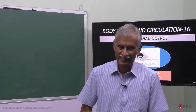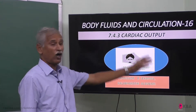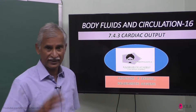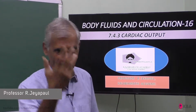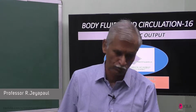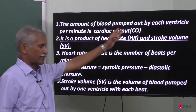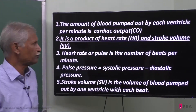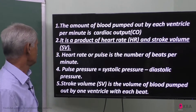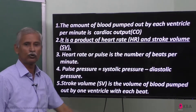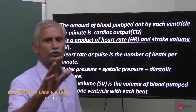My students, welcome to Kalabharita Academy. In today's discussion, we will learn about cardiac output — how to calculate it. The amount of blood pumped out by each ventricle per minute is called cardiac output, abbreviated as CO.